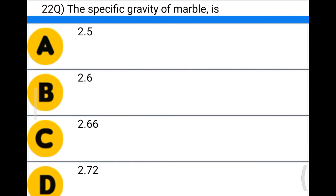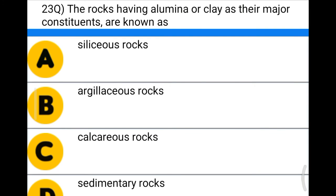Next question: the specific gravity of marble is — option A: 2.5, option B: 2.6, option C: 2.66, option D: 2.72. The correct answer is option D: 2.72. Next question: rocks having alumina or clay as their major constituents are known as — option A: siliceous rocks, option B: argillaceous rocks, option C: calcareous rocks, option D: sedimentary rocks. The correct answer is option B: argillaceous rocks.